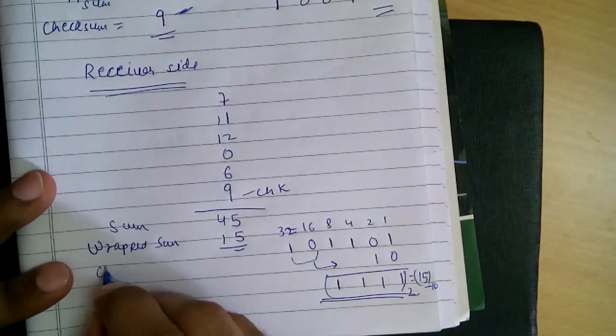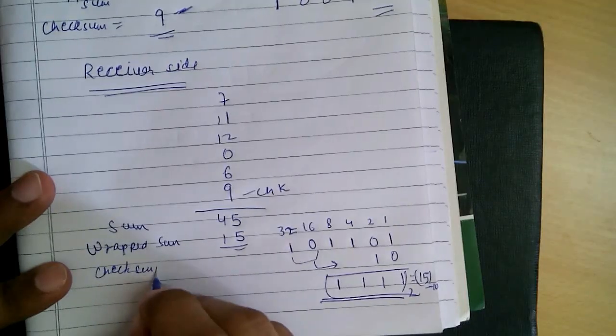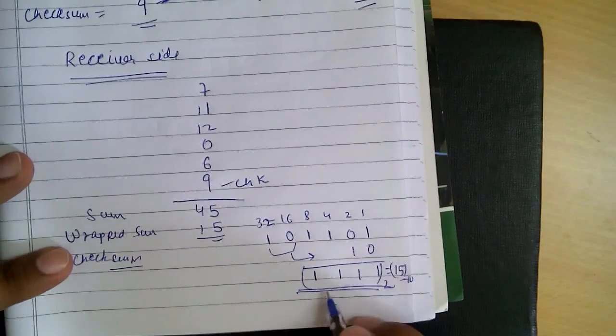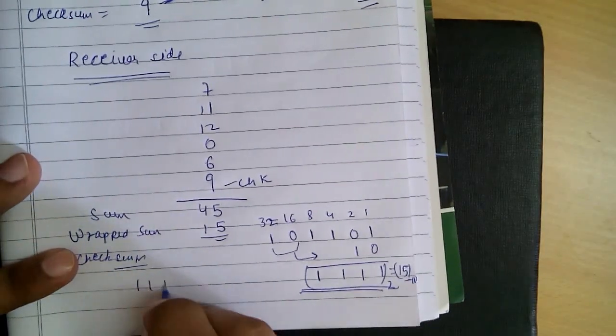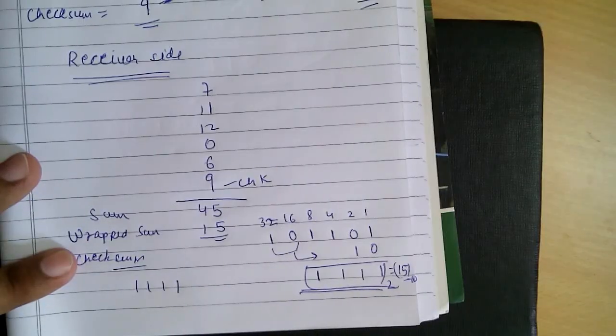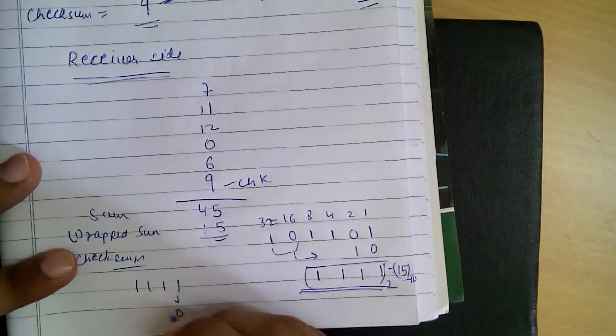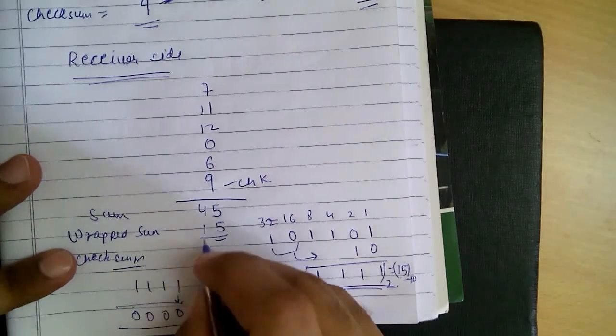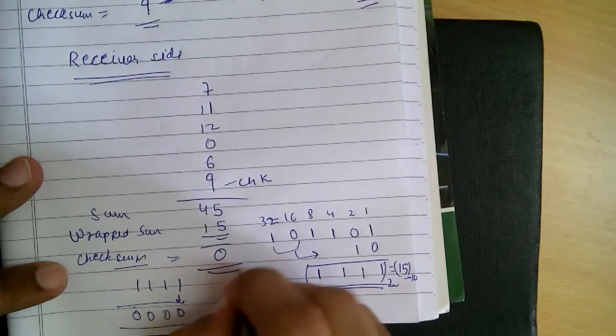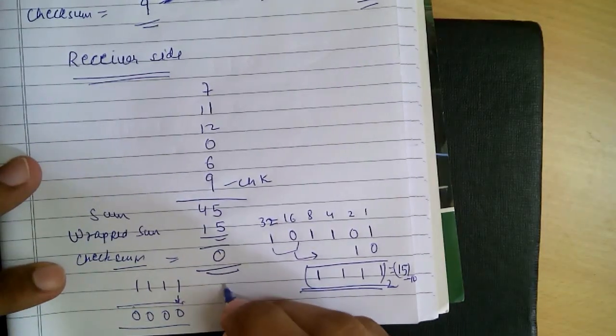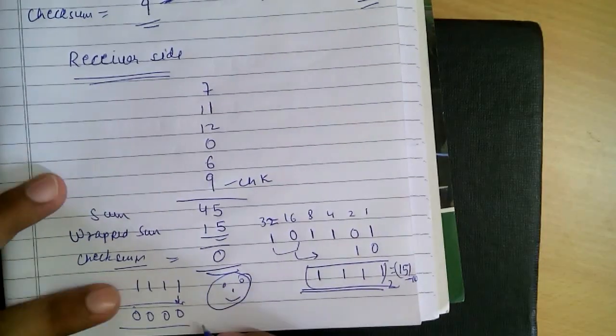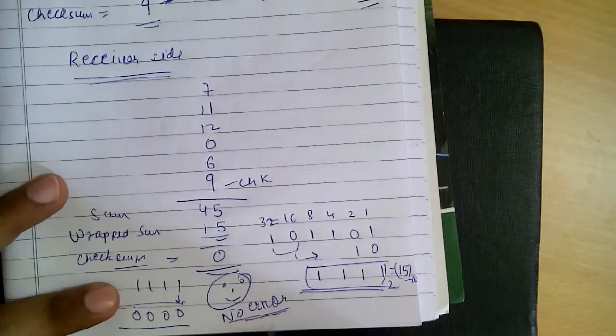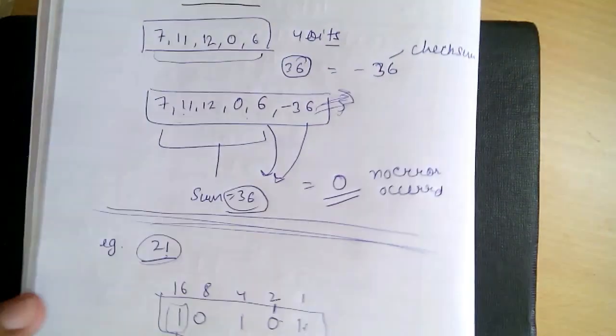Now to get the checksum, we complement it. Our 1111, performing 1's complement, becomes 0000. So our checksum is 0. Therefore, no error occurred. This is how we perform checksum for error detection. See you next time.